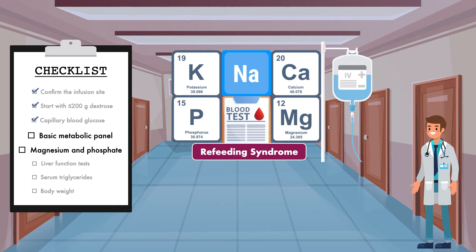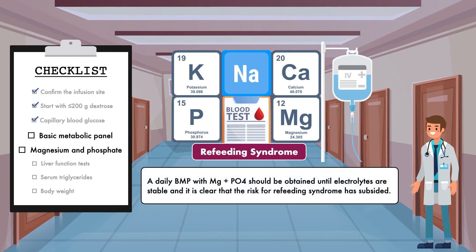Patients who are severely malnourished are at particularly high risk for this complication. If electrolytes are already low when parenteral nutrition is started, there is a chance they will drop even lower to life-threatening levels. Since risk for this complication can last for at least five days after nutrition support is started, a daily BMP with magnesium and phosphate should be obtained until electrolytes are stable and it is clear that the risk for refeeding syndrome has subsided.